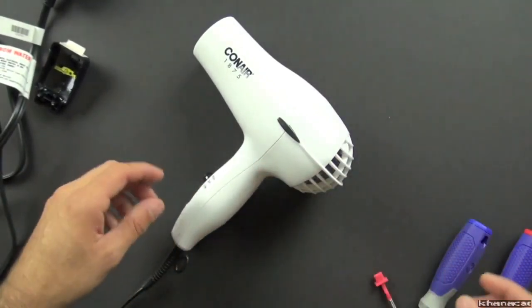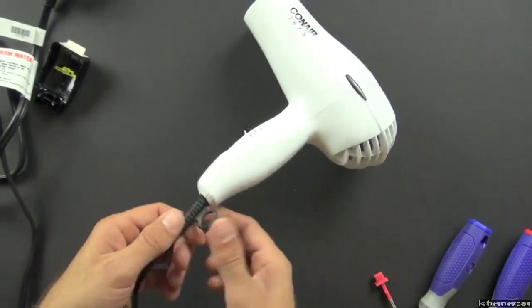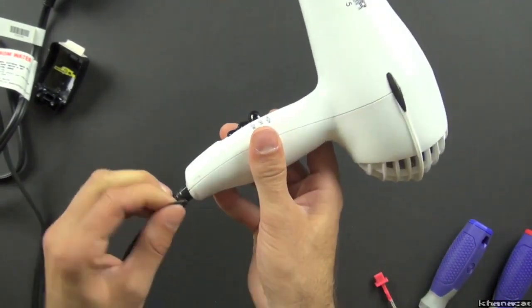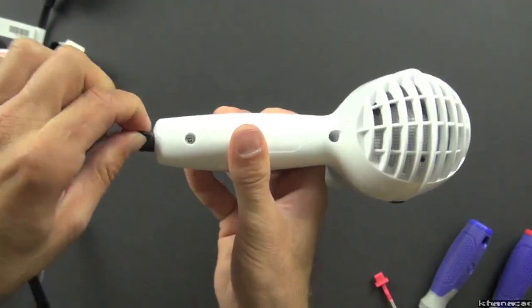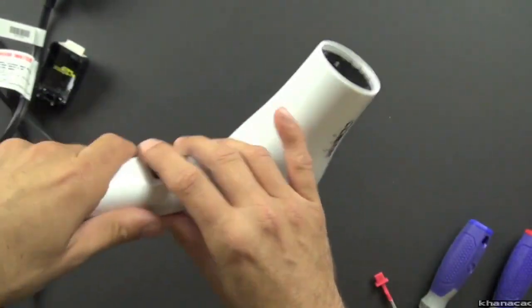Let's take a look at the hairdryer itself, and as we come up the plug here, this is where the power comes in. We have another protective rubber piece and a little holder here that's molded in, which is kind of nice, so you can hang your hairdryer in the bathroom if you want to.